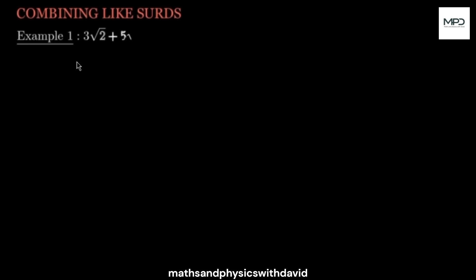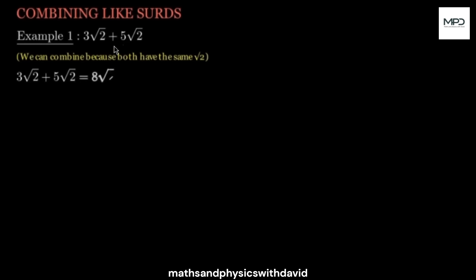Now let's talk about combining like surds. In this example, 3 root 2 plus 5 root 2 are like surds because root 2 and root 2 are the same. If they have the same square root, all you need to do is add the coefficients together and pick one of those surds — 3 plus 5 is 8 — and then one of the square roots, which is square root of 2.